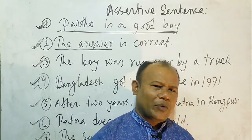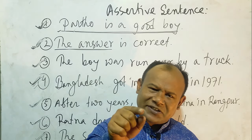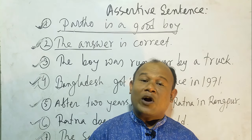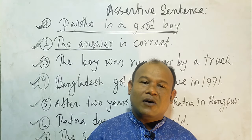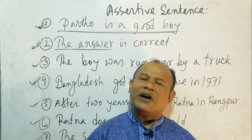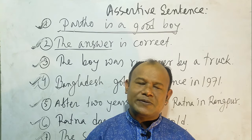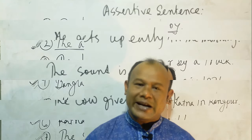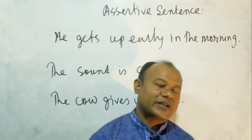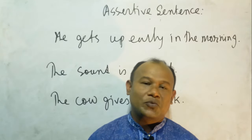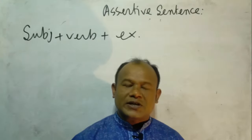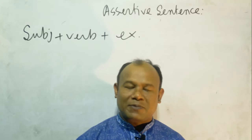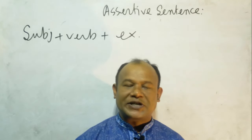In another way, it can be said that the sentence that describes a person, a thing, an animal, or anything else is called an assertive sentence. An assertive sentence starts with a subject and ends with a full stop. The structure of an assertive sentence is: subject plus verb plus extension.